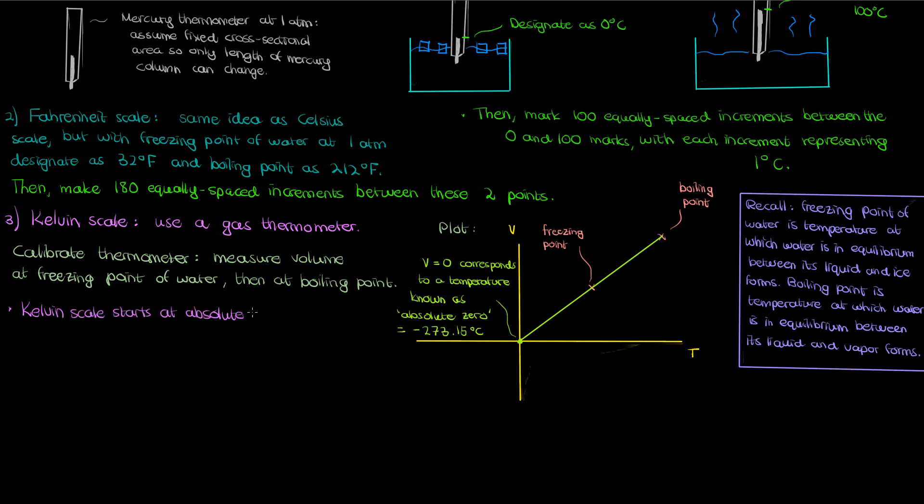The Kelvin temperature scale starts at absolute zero and goes up in the same increments as the Celsius scale. So a Kelvin is the same size as a degree Celsius, but the Kelvin temperature scale starts at absolute zero as opposed to the Celsius scale, which starts at the freezing point of water.